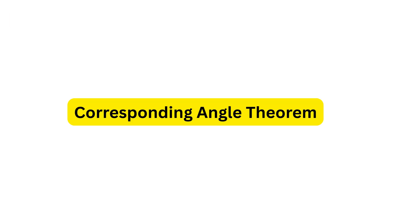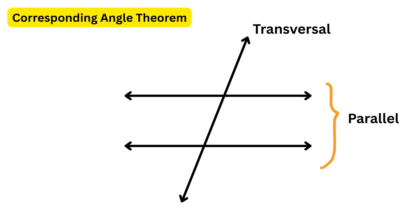Next is the corresponding angle theorem. When a transversal crosses two parallel lines, the corresponding angles are equal. Corresponding angles are on the same side of the transversal — one on the top line and one on the bottom line in matching positions. For example, if a corresponding angle on the top line is 80 degrees, the corresponding angle on the bottom line will also be 80 degrees.